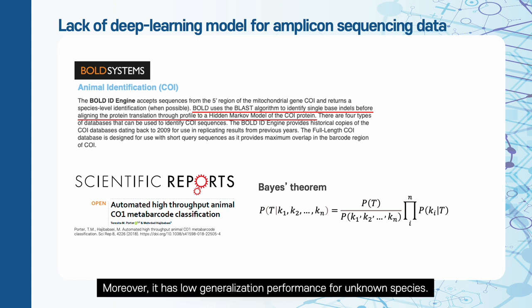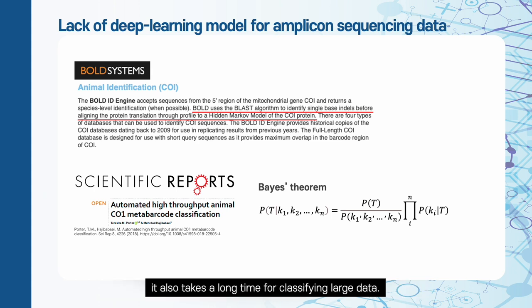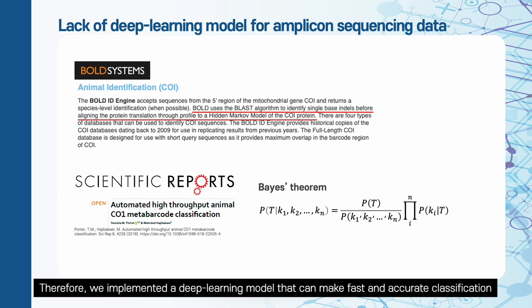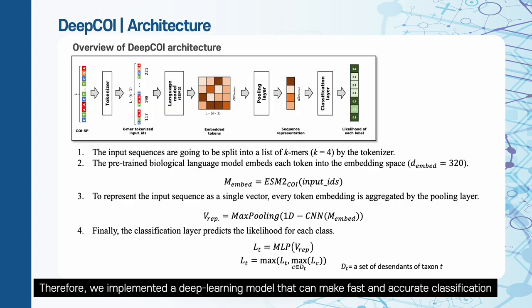Moreover, it has low generalization performance for unknown species. Although a statistical model based on Bayes' theorem was proposed, it also takes a long time for classifying large data. Therefore, we implemented a deep learning model that can make fast and accurate classification.